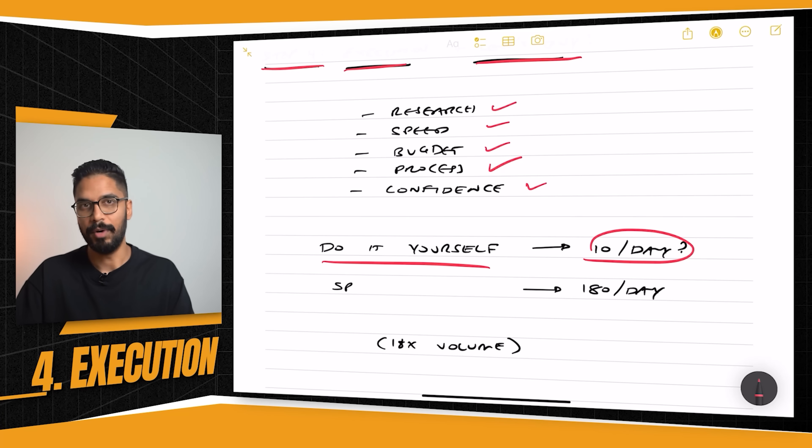Now, if you go ahead and you use a buyer's agent, depending on the size of their company, I can only talk about our numbers. Now, at SP, we can pretty much go through 180 per day. And that's because nine people do it full-time and they look at 20 deals every single day.